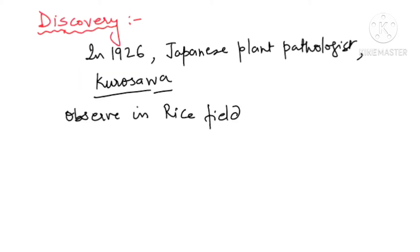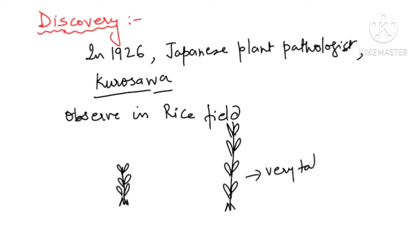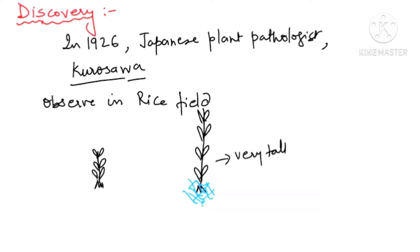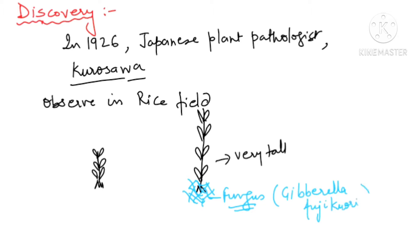He observed in the rice field that some seedlings were only short, while some seedlings were growing very tall. The plant which was growing very tall was found to have an infection of a fungus. This fungus was Gibberella fujicuroi.